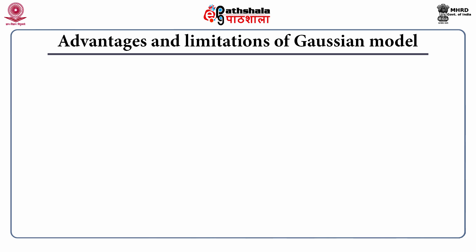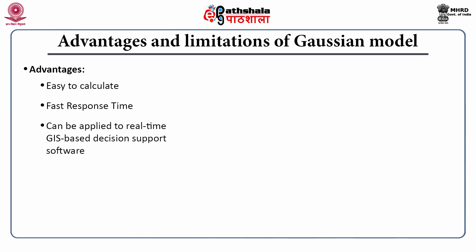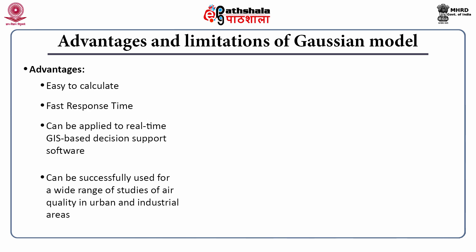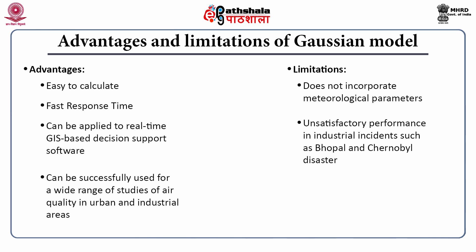The Gaussian model includes some advantages and limitations. Advantages include: it is easy to calculate, it has fast response time, it can be applied to real-time GIS-based decision support software, and it can be successfully used for a wide range of studies of air quality in urban and industrial areas. Limitations include that it does not incorporate all meteorological parameters and shows unsatisfactory performance in major industrial incidents such as the Bhopal or Chernobyl disasters.